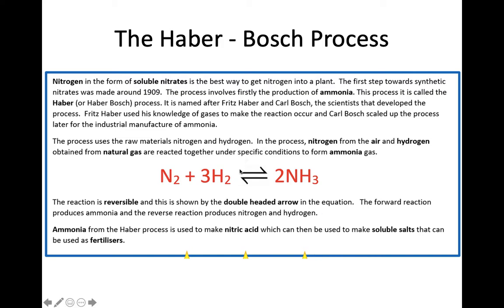This double-headed arrow in the equation represents a reversible reaction. The ammonia produced in the Haber process is used to make nitric acid, and it is this nitric acid which is used to make soluble salts that can be used in fertilisers — we're going to learn more about that in the next lesson. But first, how did Fritz Haber make this reaction happen?